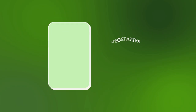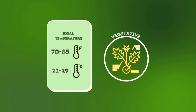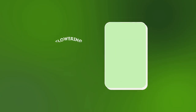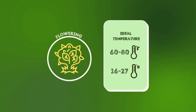The ideal temperature in the vegetative stage is around 70 to 85 degrees Fahrenheit or 21 to 29 degrees Celsius. Once the plants begin transitioning into the flowering stage, the ideal temperatures are between 60 and 80 degrees Fahrenheit or 16 and 27 degrees Celsius.